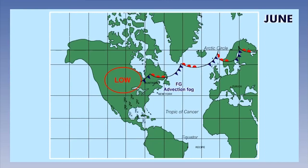The Gulf of Mexico is characterised by frequent but isolated thermal thunderstorms, which are most active late afternoon and produce spectacular lightning.